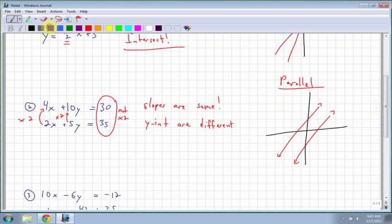But again, you could have gone through and solved each one of these for y equals. I could have taken the first one and solved for y. I would have gotten 10y equals negative 4x plus 30. Then I can divide by 10, so I get y equals negative 2 fifths x plus 3. So that's my equation of my first line.